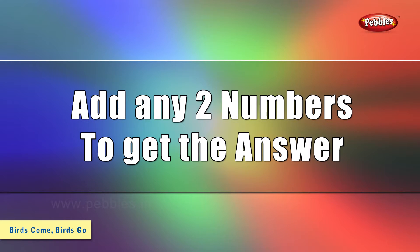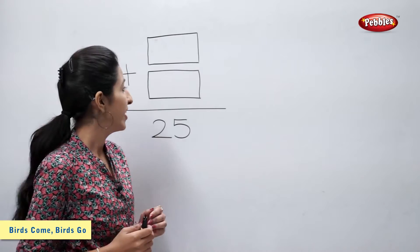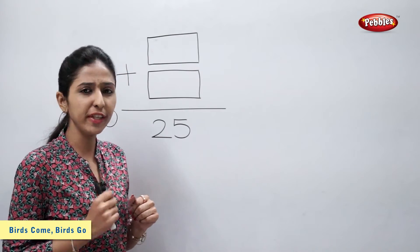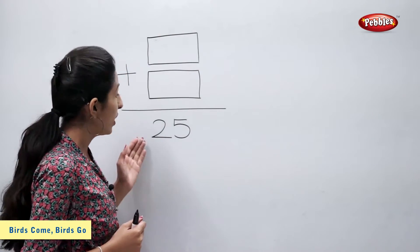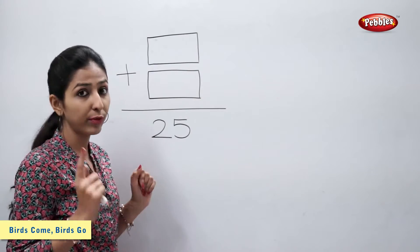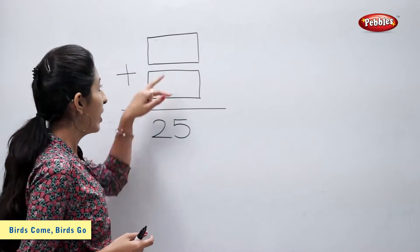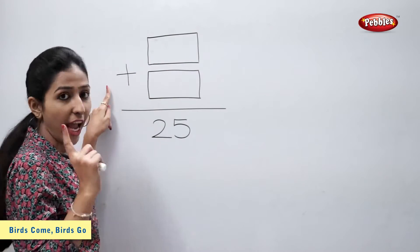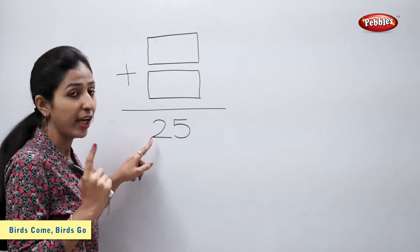Add any two numbers to get the answer. Students, here we have a different kind of sum. We already have the answer 25, and we have to find two numbers whose addition is 25.